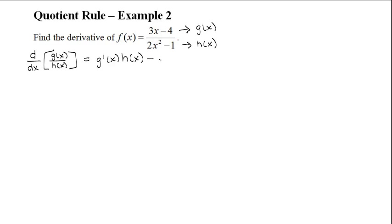and subtract the derivative of the bottom function multiplied by the top function, then divide this all by the bottom function squared.